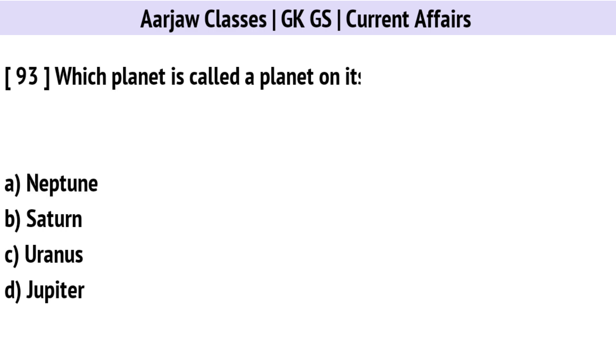Which planet is called a planet on its side? Correct option is C: Uranus.